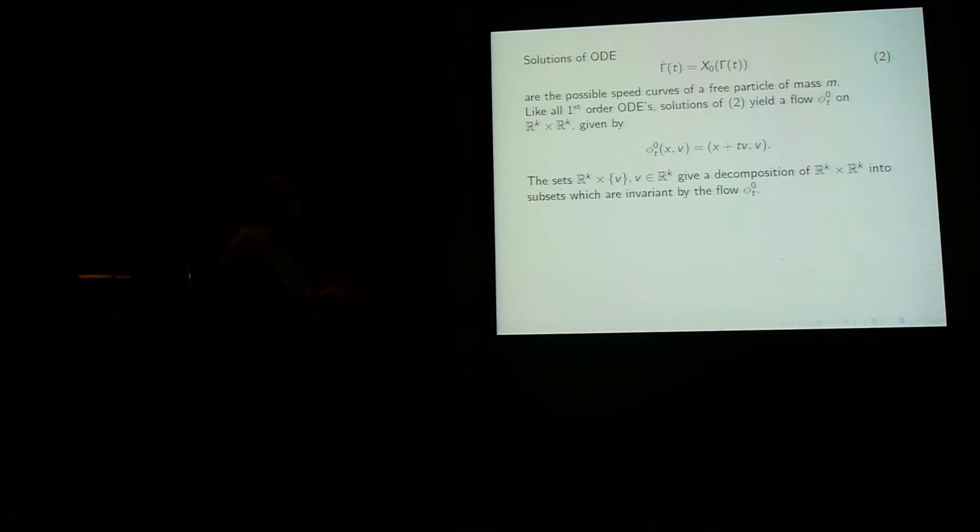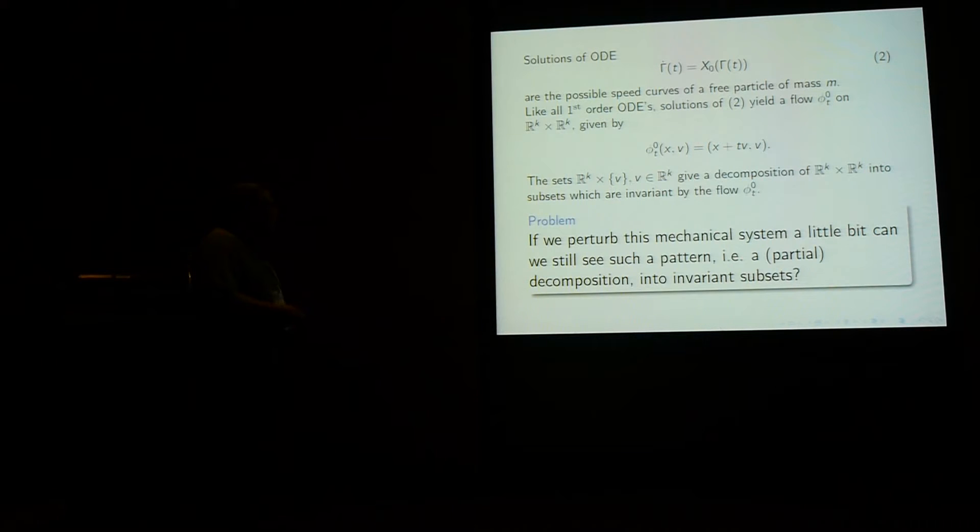So the solution of this ODE are exactly the possible speed curve of a free particle of mass M. And like any first-order ODE, we get a flow. And the flow just has a simple form, which means that the set Rᴷ cross V, where V fits the speed, gives a decomposition into subsets which are invariant by your flow.